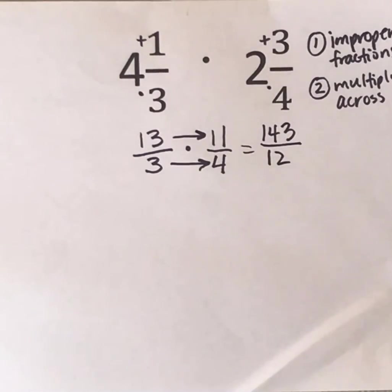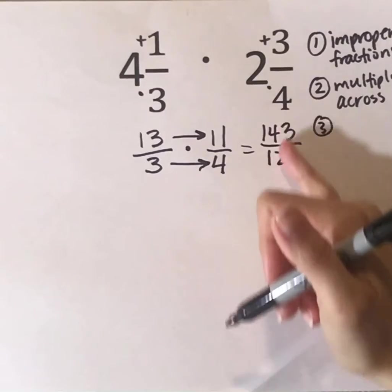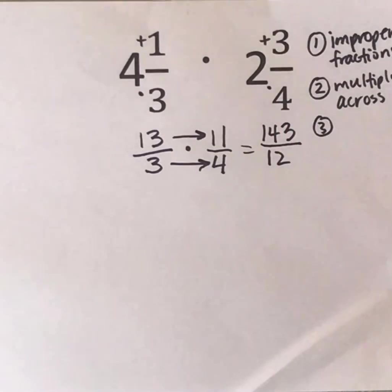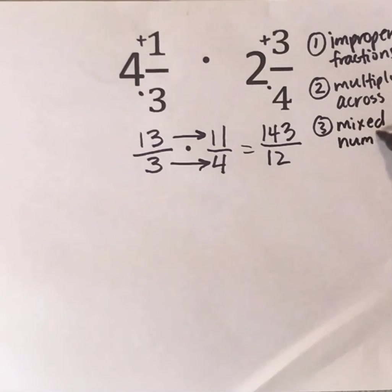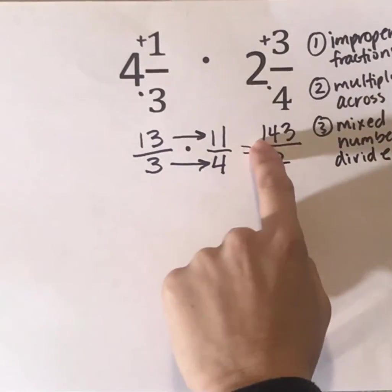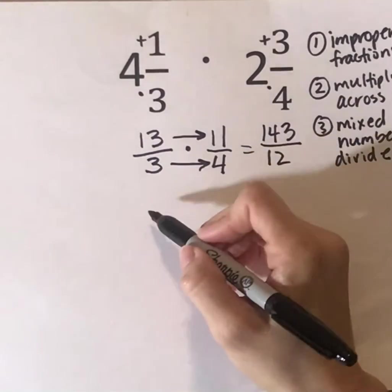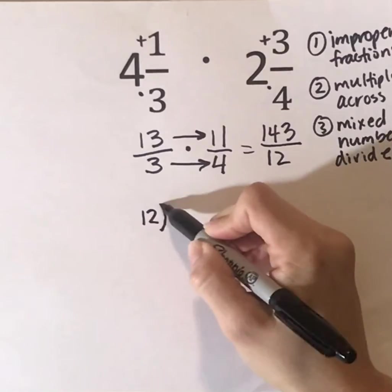So the next step is I need to change this improper fraction into a mixed number. So our third step is to change it back into a mixed number. And the way that I do that is you divide. So we're going to do 143 divided by 12, like this.